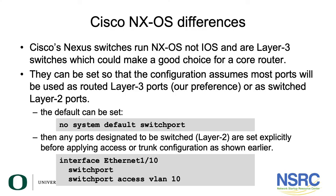Now let us look at Cisco NXOS differences. NXOS switches run NXOS, not IOS, and they are layer 3 switches, which makes them a good choice for a core router. They can be set so that the configuration assumes most ports will be used as routed layer 3 ports, which is our preference, or as switched layer 2 ports.